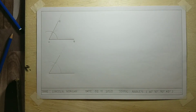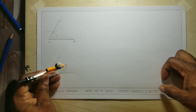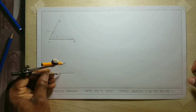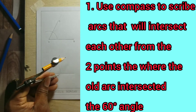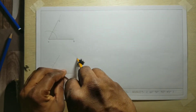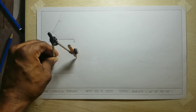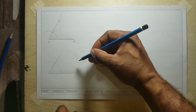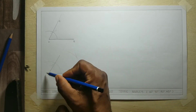We will now need to bisect our 60 degree angle. In order to bisect it, we will have to use these two points — where the arc is touching both lines. We will open our compass, place it at one point, and scribe an arc. We will then place the compass at the other point and scribe another arc to intersect the first arc. We now need to note where the two arcs intersected each other, then draw a line from that intersection to point A.